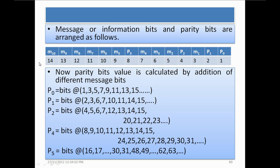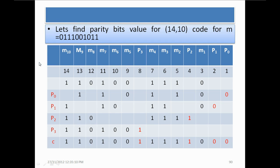Now let's find the parity bit values for the (14,10) code for message M = 0, 1, 1, 1, 0, 0, 1, 0, 1, 1. For P0 we add bits at positions 1, 3, 5, 7, 9, 11, and 13.